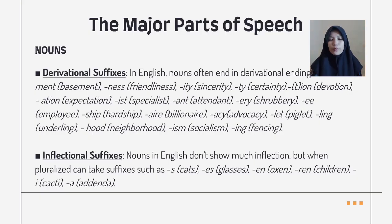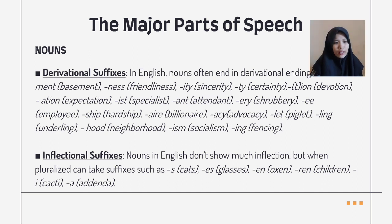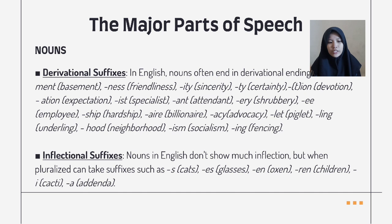The major parts of speech: Noun. The derivational suffixes in English — nouns often end in derivational endings such as '-ment' as in 'basement,' '-ness' as in 'friendliness,' '-ety' as in 'signery,' '-ty' as in 'certainty,' '-tion' as in 'deviation,' '-ation' as in 'expectation,' '-ist' as in 'specialist,' and '-ant' as in 'attendant.' Inflectional suffixes: nouns in English do not show much inflection, but when pluralized can take suffixes such as '-s' for 'cats,' '-es' for 'grasses,' '-en' for 'oxen,' '-ren' for 'children,' '-e' for 'captive,' and '-a' for a Latin-type plural.